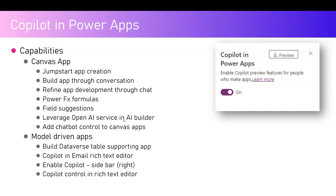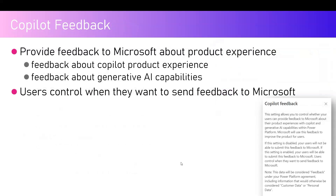From a model-driven app perspective, you can build data to support the app, have Copilot in the email rich text editor — which allows you to draft an email and suggest modifications — enable Copilot on the sidebar on the right-hand side, and control Copilot behavior from a rich text data perspective.